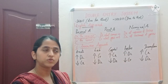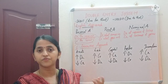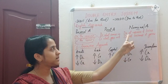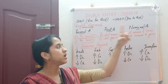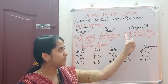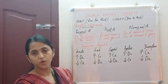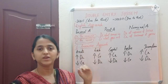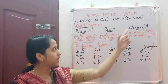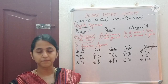For nominal account — accounts of incomes, expenses, gains, and losses — the rule is: debit all expenses and losses, and credit all incomes and gains. If it is an expense or loss, we debit it; if it is an income or gain, we credit it. So to summarize: personal account — debit the receiver, credit the giver; real account — debit what comes in, credit what goes out; nominal account — debit all expenses and losses, credit all incomes and gains.